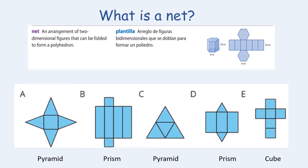One of the vocabulary words from our objective was net. A net is an arrangement of two-dimensional figures that can be folded to form a polyhedron. If you look at the images, you will see several nets that when drawn on paper, cut out, and folded together, would make three-dimensional shapes such as prisms, pyramids, and cubes.